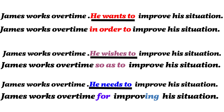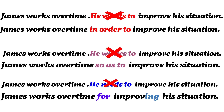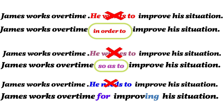Expressions like 'he wants to', 'he wishes to', 'he needs to', 'he desires', 'he would like', 'he hopes', etc. — all these expressions carry the intention that he wants to improve his situation. We drop them and use expressions like 'in order to', 'so as to', or 'for' plus the verb in gerund (-ing) form. For example: 'James works overtime for improving his situation.'